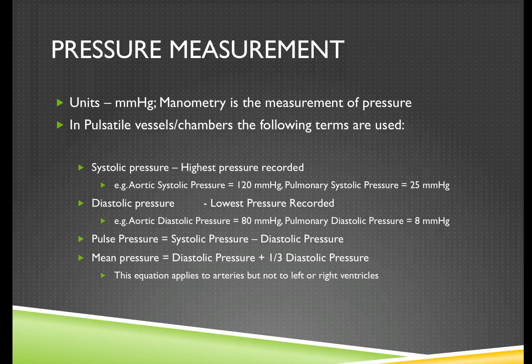In pulsatile vessels and chambers we use some approximations. Systolic pressure is the highest pressure recorded, for example aortic systolic pressure might be 120, pulmonary systolic pressure might be 25. Diastolic is the lowest pressure recorded, so aortic diastolic pressure might be 80 millimeters of mercury. We arbitrarily define pulse pressure as the difference between systolic and diastolic pressure, and we calculate that the mean arterial pressure is the diastolic pressure plus one third of the pulse pressure. This equation applies to arteries but not to left or right ventricles.